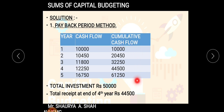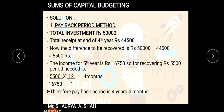The payback period is the specific year and month in which you get back the investment you made. The total receipts at the end of the fourth year are 44,500, so the investment of fifty thousand is recovered between the fourth and fifth years. In the fifth year, receipts are 16,750. The difference is 5,500. If in 12 months I am getting 16,750, then for 5,500 the calculation gives approximately four months. So the payback period is four years and four months.